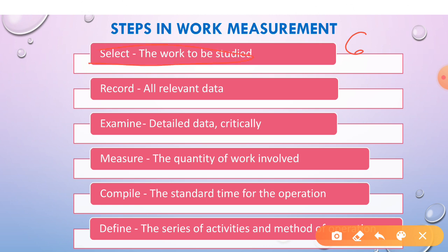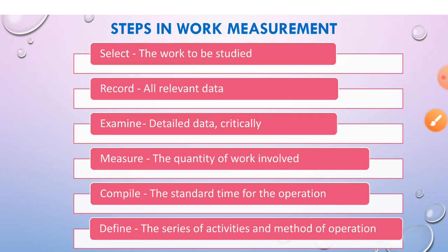There are six steps in work measurement. Step one: select the work to be studied — identify the task whose standard time is to be determined. Step two: record all relevant data related to that job. Step three: examine — examine the data in detail and critically analyze it. Step four: measure — measure the quantity of work involved in the job. Step five: compile — compile the standard time for the operation and compare it with actual time to define the expected time of performance. Step six: define — define the series of activities and methods of operation for that particular job.